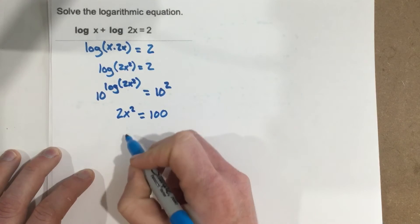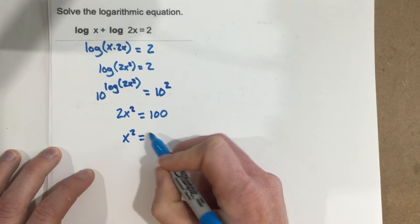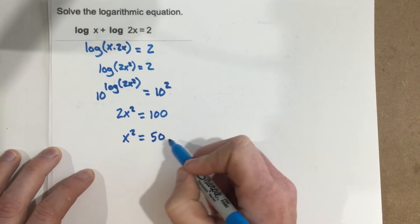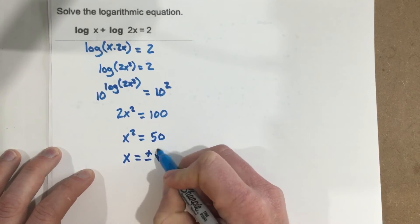If we divide by 2, we get x squared equals, this would be 50. Take the square root of each side, we get x equals plus and minus root 50.